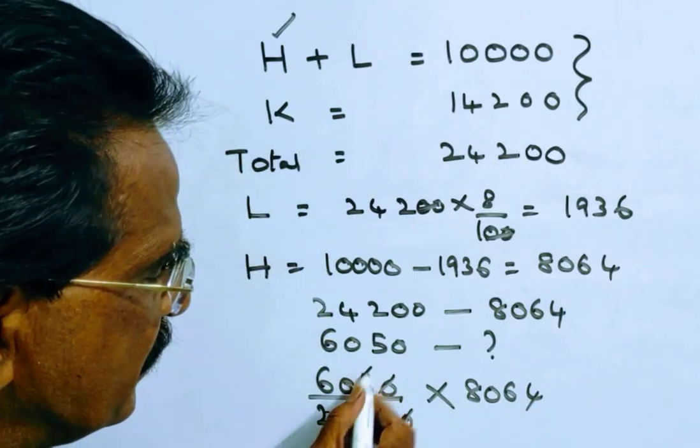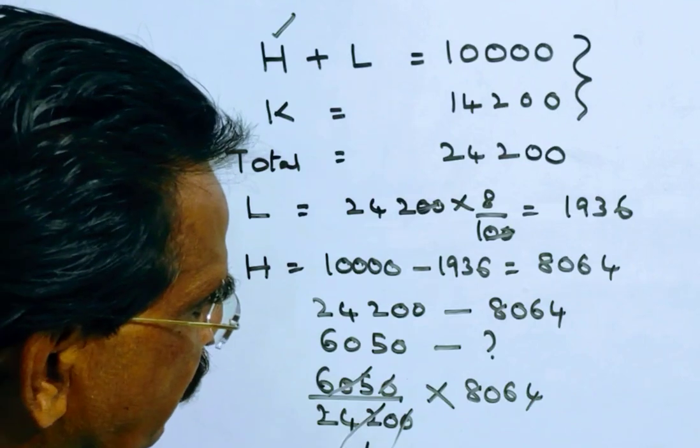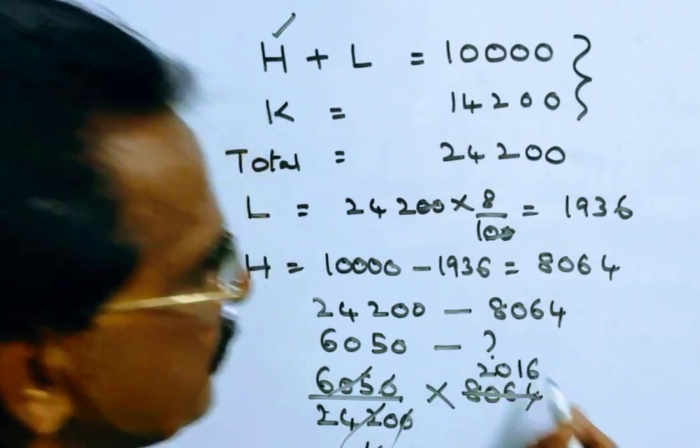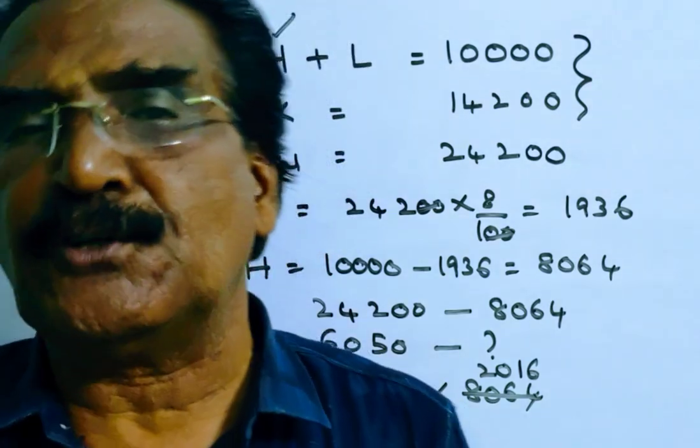Canceling zeros, we get 2016. So 2016 is the votes polled by Hari.